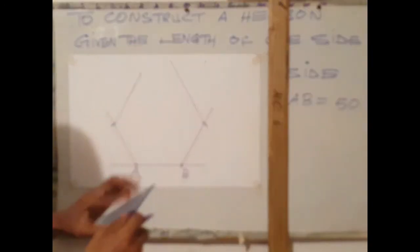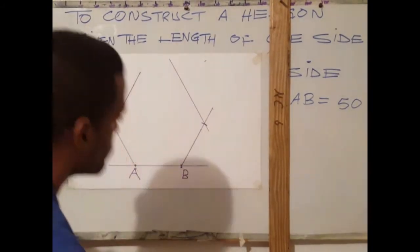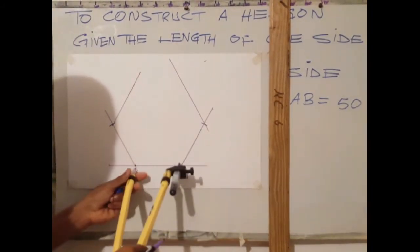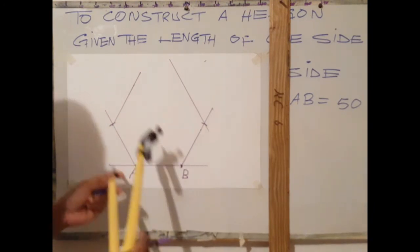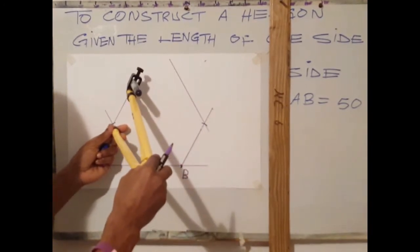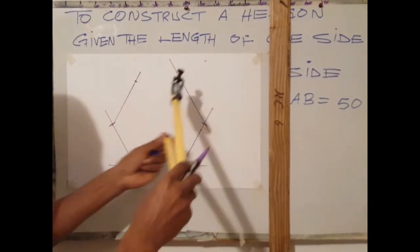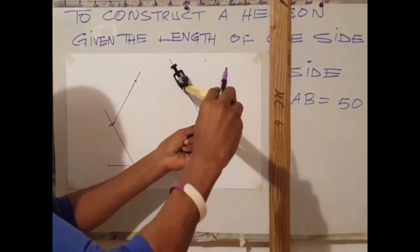In your case, the set square would be long enough to draw that line. Next step. Again, I check to ensure that this is the length I want it to be from here. I mark my 50. On this line, I also mark my 50.